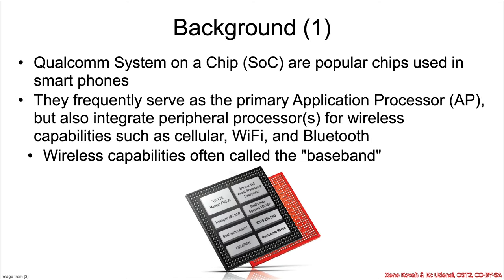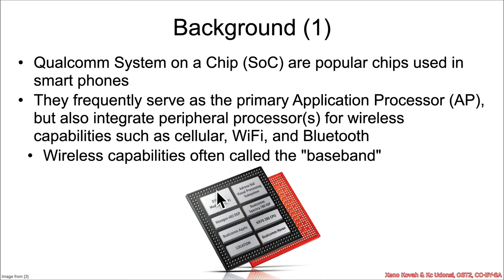Let's take a look at a race condition in the loading of cellular firmware on Qualcomm systems on a chip. These Qualcomm systems are popular on smartphones, and often serve as the primary application processor — where your Linux runs on your Android system. Because they are systems on a chip, they can also integrate peripheral processors with wireless capabilities such as cellular, Wi-Fi, and Bluetooth. Wireless capabilities are often called the baseband.